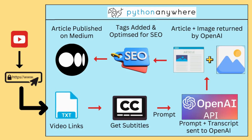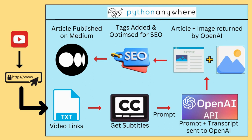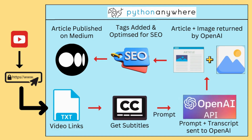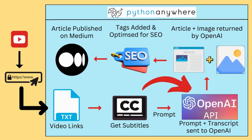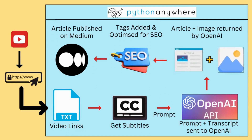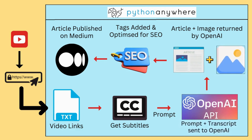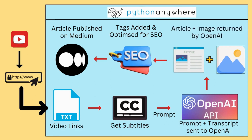After putting all the video links in the file, our program inside Python Anywhere will fetch the video links one by one. It will first fetch the video link, then retrieve the transcript or subtitles of the video. After opening the subtitles, it will send them along with a prompt to OpenAI — like sending ingredients to a restaurant chef to cook. The OpenAI API will generate an article along with an image based on the prompt and subtitles. In the next step, the program will automatically perform SEO settings — adding specific tags and optimizing for SEO — all done automatically.